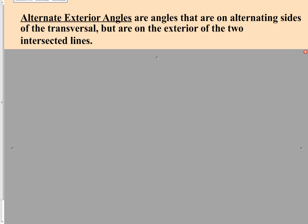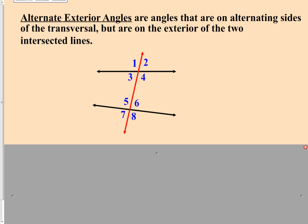The final category of angles we're looking at today are alternate exterior angles. Once again, the name describes exactly where they are and where to find them. Alternate exterior angles are angles on alternating sides of the transversal but on the exterior of the two intersected lines. Using the same diagram, this time we are looking on the exterior. The exterior includes angles one, two, seven, and eight. As it says alternate, we're looking on alternating sides of the transversal at two different intersections.